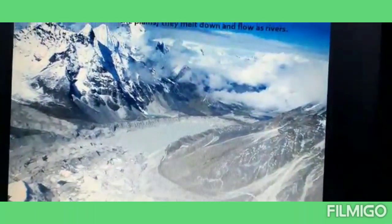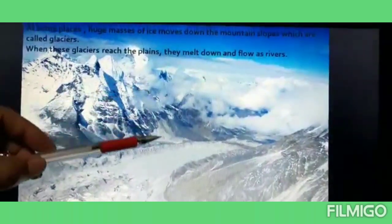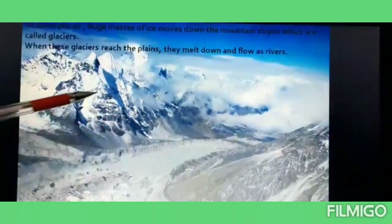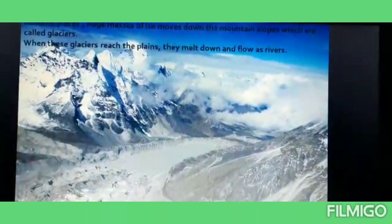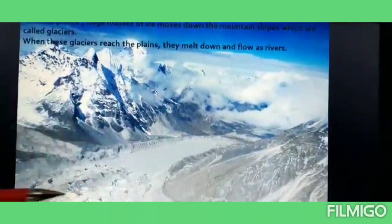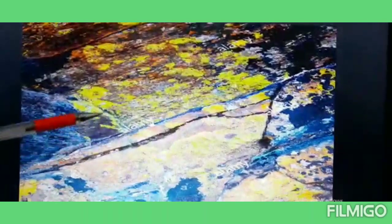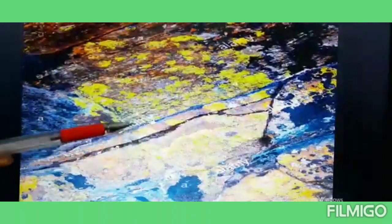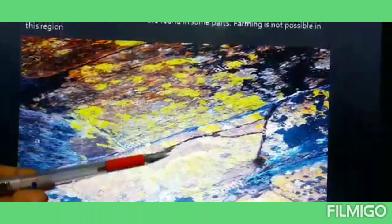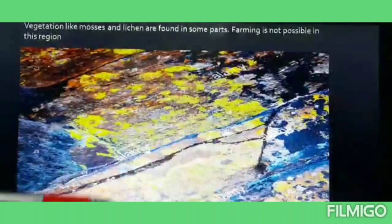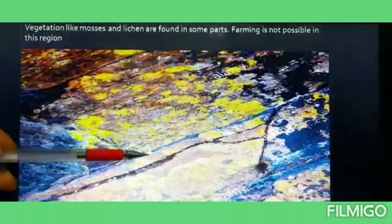At some places, huge masses of ice move down the mountain slopes — these are called glaciers. When these glaciers reach the plains, they melt down and flow as rivers. Vegetation like mosses and lichen are found in some parts of the Himadri ranges. Farming is not possible in this region because the area is covered with ice throughout the year and the land is very hard.